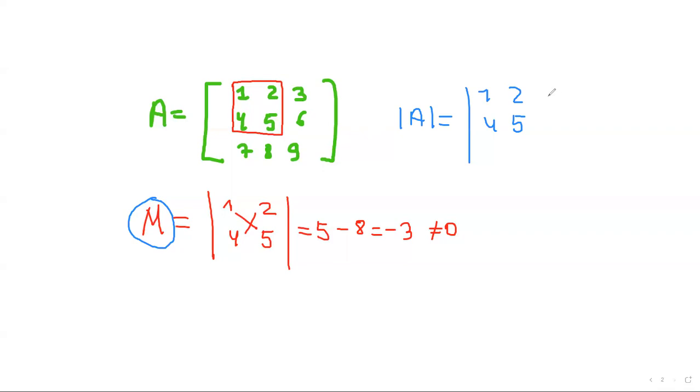So determinant of A is 1, 2, 4, 5. We have this minor inside of this bigger determinant. So it's going to be 1, 2, 3, 4, 5, 6, 7, 8, 9. So we know from our previous lectures that in order to calculate this 3 by 3 determinant, we can apply different methods. And one of the methods is the Sarrus method.